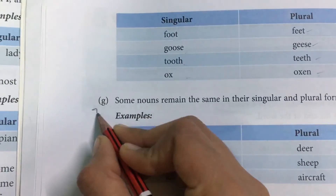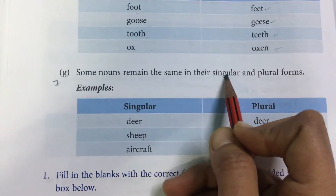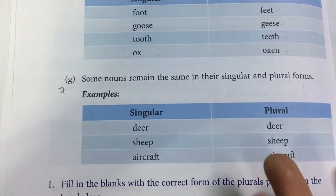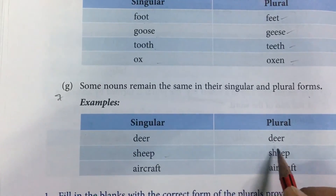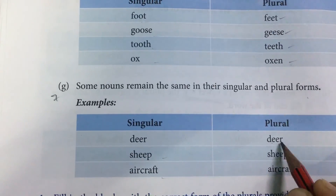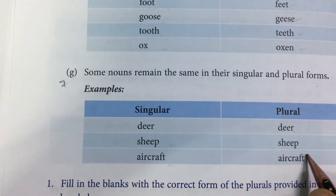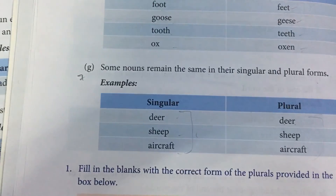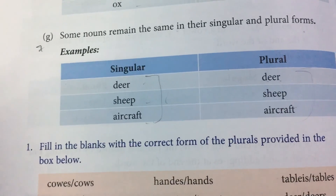Rule number 7: some nouns remain the same in both the singular and plural form. جو ہمارے singular میں ہوتے ہیں وہی plural میں ہوتے ہیں۔ Like deer remains deer, sheep remains sheep, aircraft remains aircraft — اس میں S، ES، یا VES نہیں آئے گا، spelling as it is رہتی ہے۔ So today these are the singular and plural rules. Thank you.